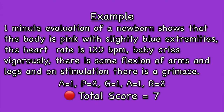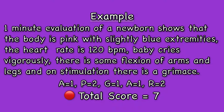Now let us see an example of how to calculate the actual APGAR score. Here is the case: a one-minute evaluation of a newborn shows that the body is pink with slightly blue extremities, the heart rate is 120 beats per minute, the baby cries vigorously, there is some flexion of the arms and legs, and on stimulation there is a grimace on the face. What would be the child's APGAR score?